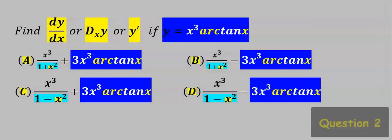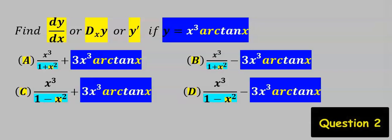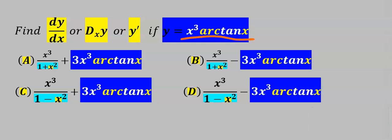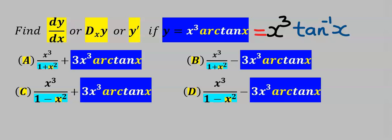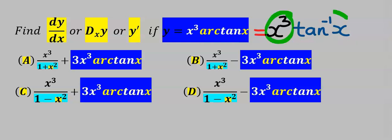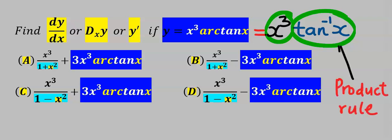Next let's find the derivative of x to the power of 3 times arctan x. We can rewrite this: arctan x is the same as tan inverse of x, and x to the power of 3 is multiplying tan inverse of x. Hence we apply the product rule for multiplying functions.